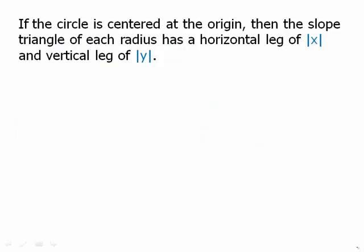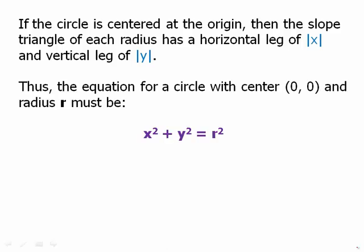If the circle is centered at the origin, then the slope triangle of each radius has a horizontal leg of the absolute value of X and a vertical leg of the absolute value of Y, regardless of what X and Y are. Thus, the equation for a circle with center 0,0 and radius R must be X squared plus Y squared equals R squared. So notice that we're really just doing the Pythagorean theorem to find the equation of a circle.